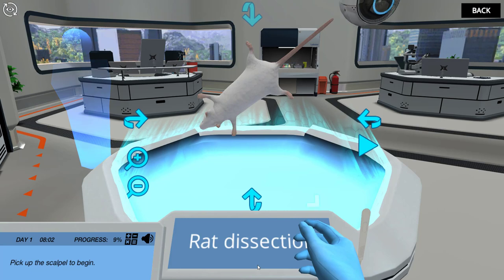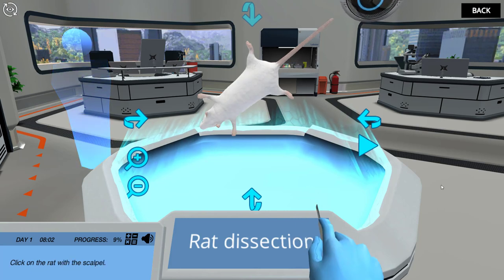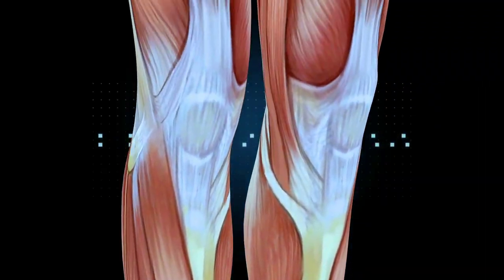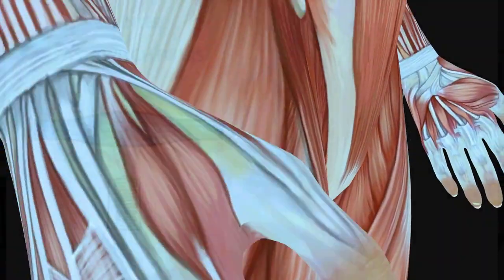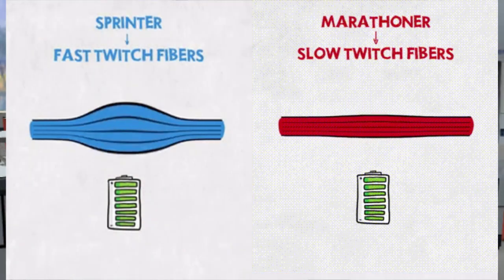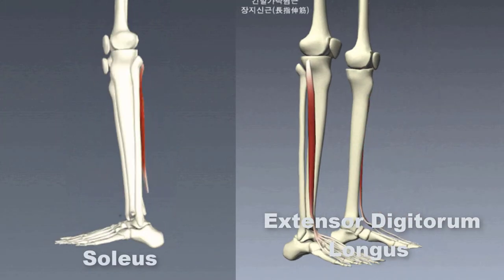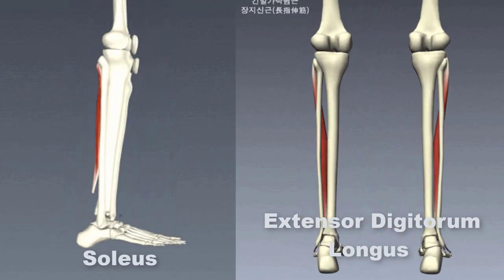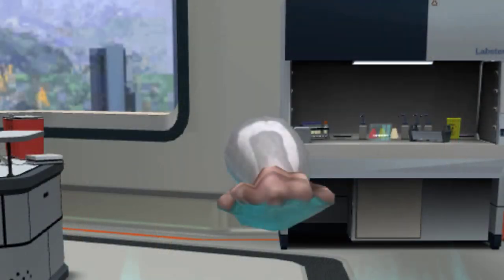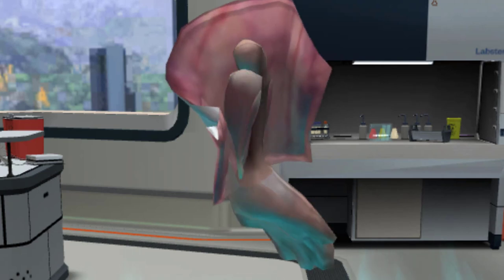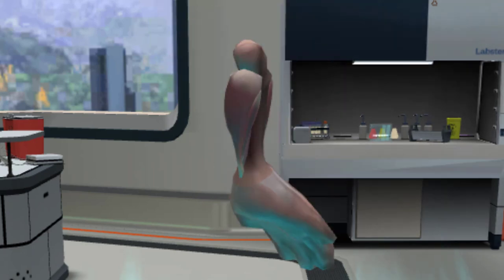Pick up the scalpel to begin. Click on the rat with the scalpel. The leg has many muscles. Today we are focusing on two muscles with different fiber compositions, one that has slow twitch fibers and one that has fast twitch fibers. Click on the rat leg to open the leg for the muscle dissection. Click on the rat leg again to remove the skin and fat. This will expose the muscles below.